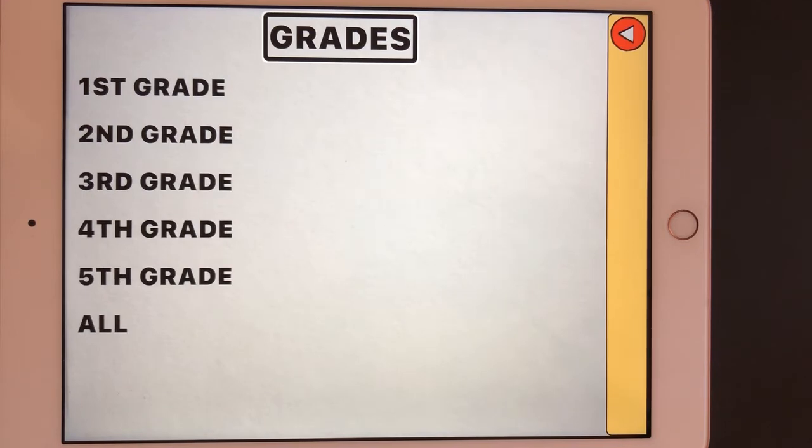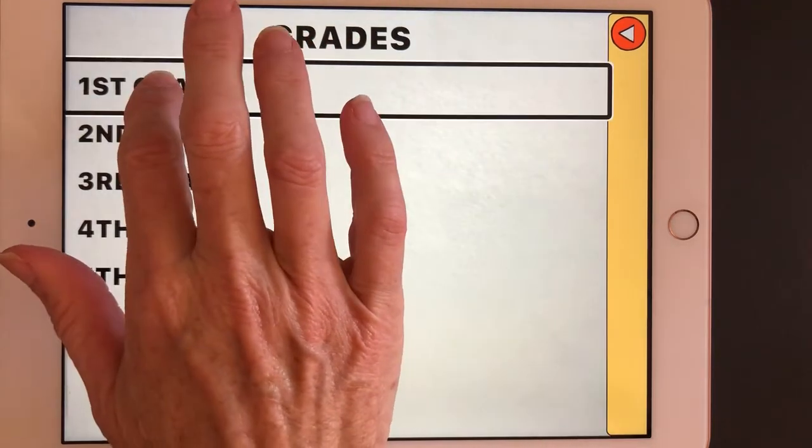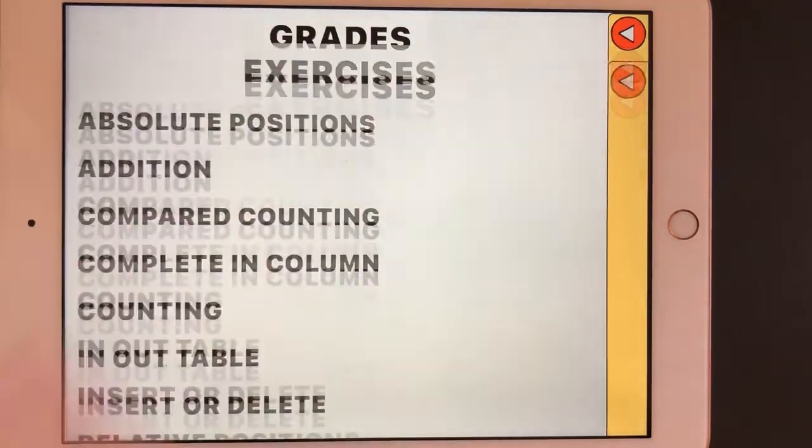Select grade page. I'm going to start with the first grade level. I have the option of first grade, second, third, fourth, fifth, and all, but we want to look at some of the ones appropriate for the youngest. I'm going to look at first grade, which is our first option.